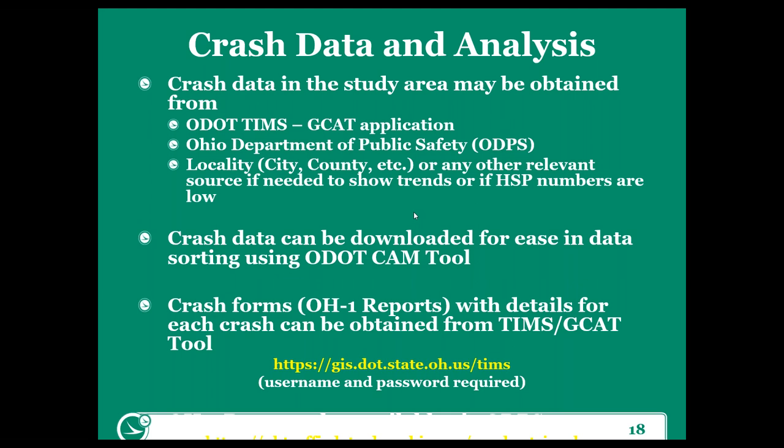In terms of analyzing and working with our crash data, we're going to go through an example of working with ODOT's CAM tool — an excellent resource that makes life significantly easier for us here in Ohio. And then the last thing is the crash report forms themselves. Crashes are all filled out on Ohio's OH1 report. Each detailed report can be pulled from TIMSS and GCAT, and really the CAM tool too — there's an option to pull the report. The reason we want to become familiar with looking at the reports is that while we get great tables of data, there are times we want to make sure that what is captured in the report is accurate to what really happened, and we'll go through a few examples of that.